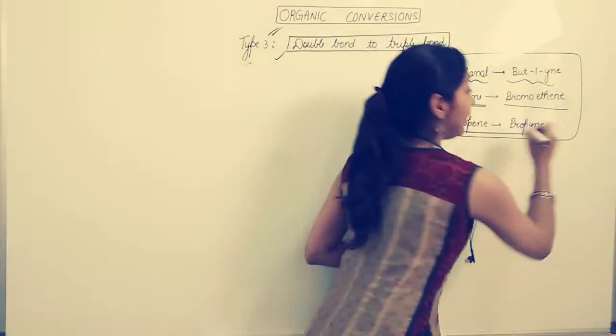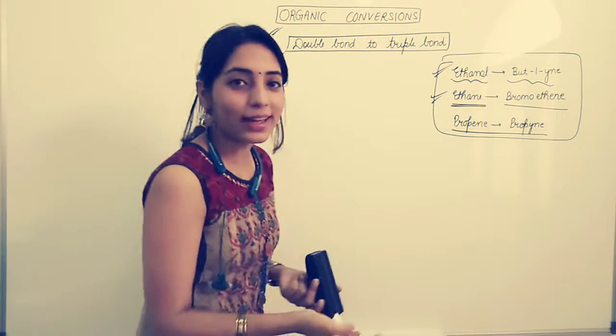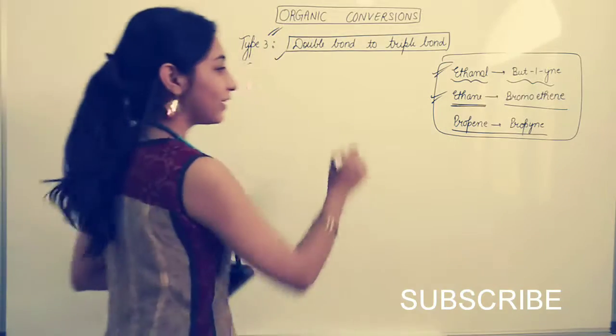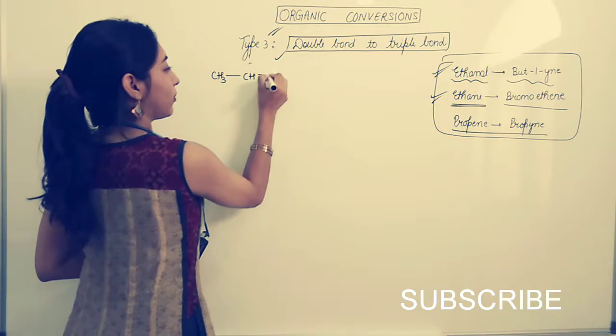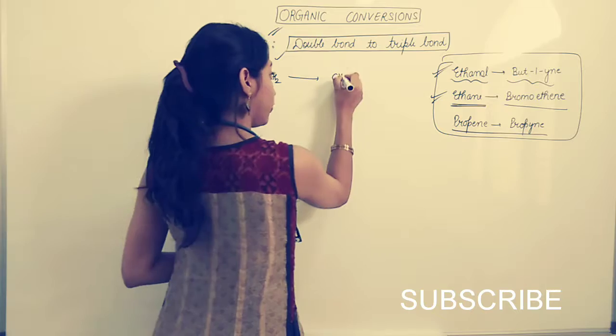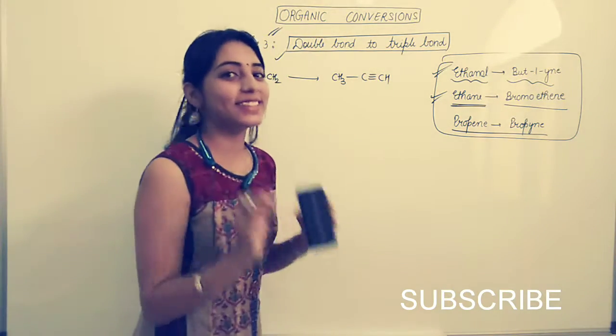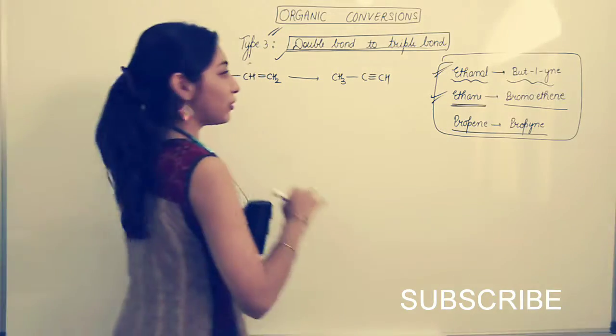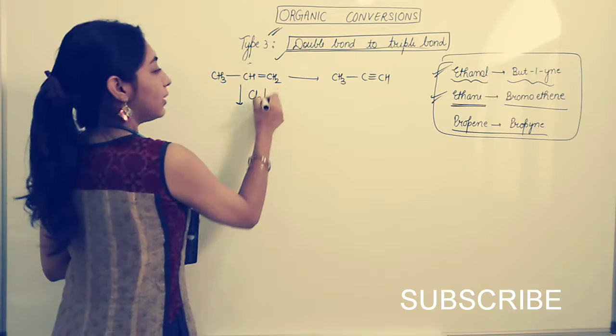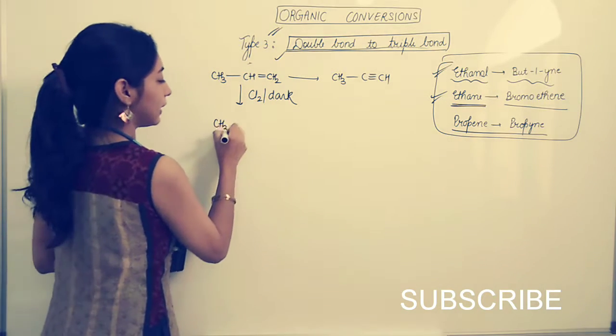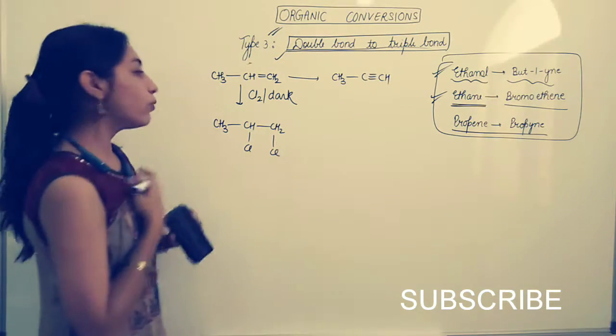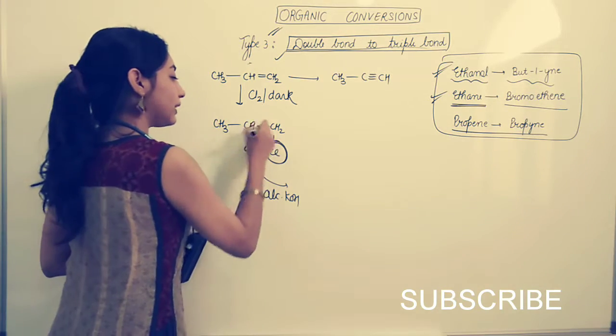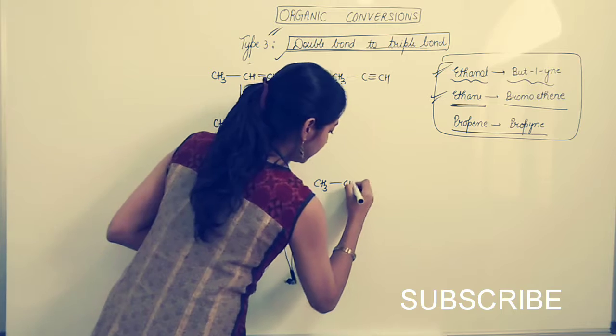The third question is I have to convert propene to propyne. This will be the easiest one, I should have started with this. So propene CH3-CH=CH2 to propyne CH3-C triple bond CH. Now what I'll do, I'll add Cl2 in the presence of dark. If I add Cl2 in dark, both positions get Cl. So this forms CH3-CHCl-CH2Cl. Now what I'll do, I'll add alcoholic KOH. If I add alcoholic KOH, one Cl and one H will go away. So this forms CH3-CHCl=CH2.